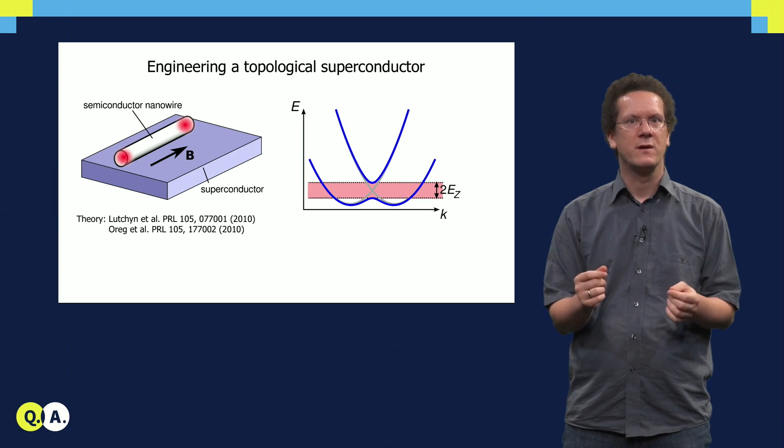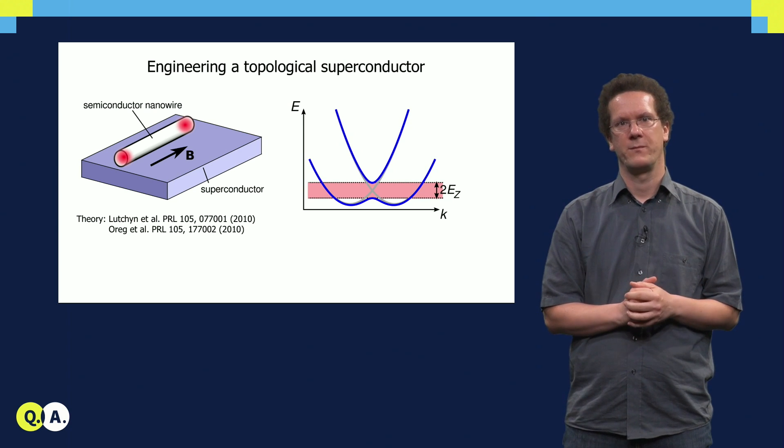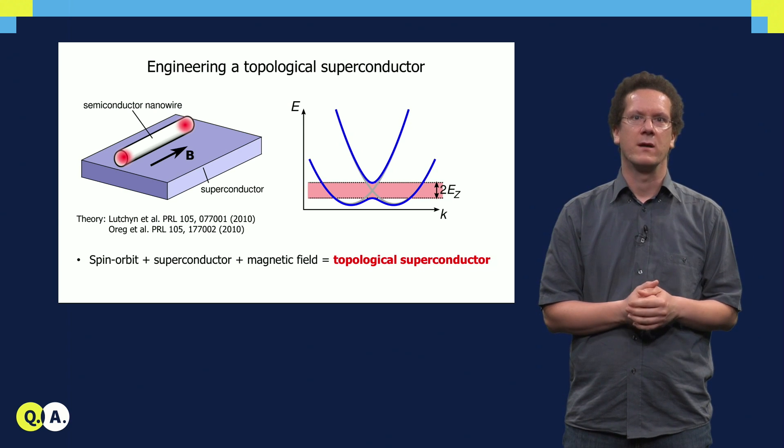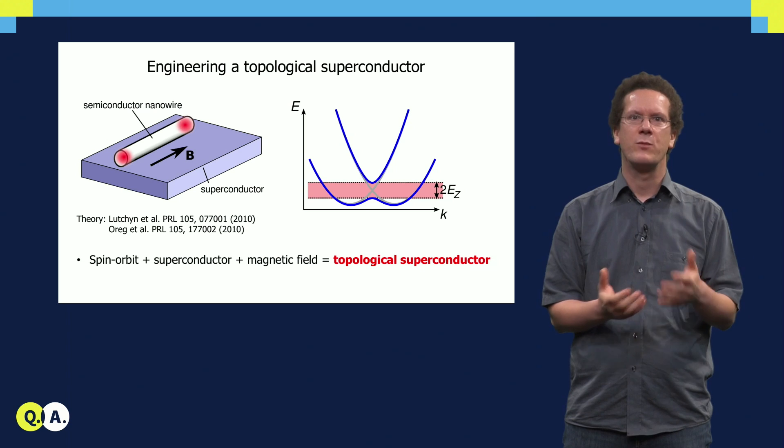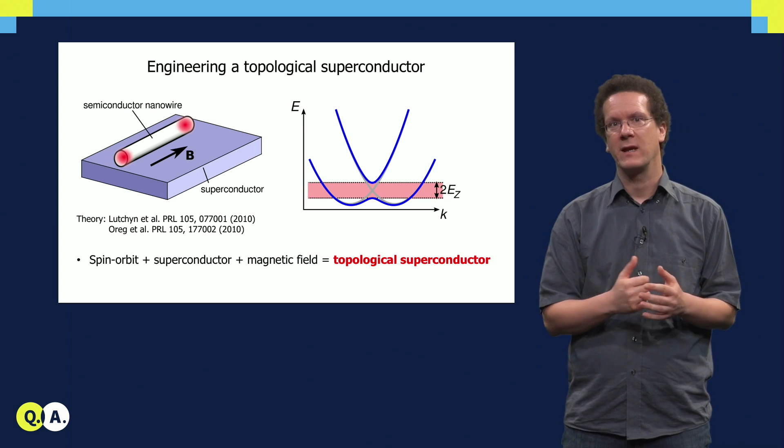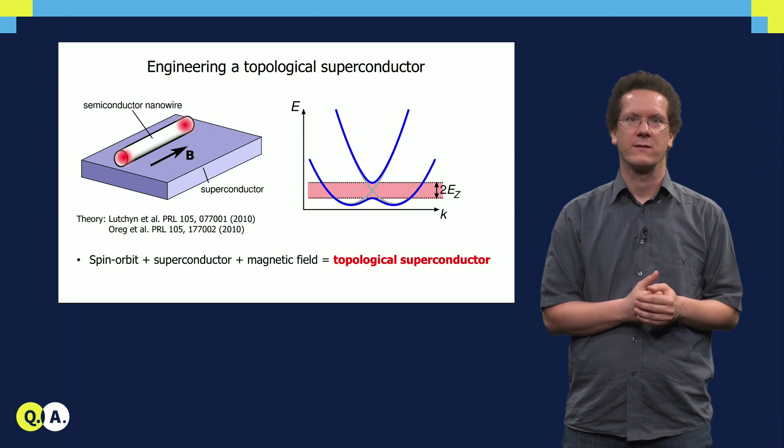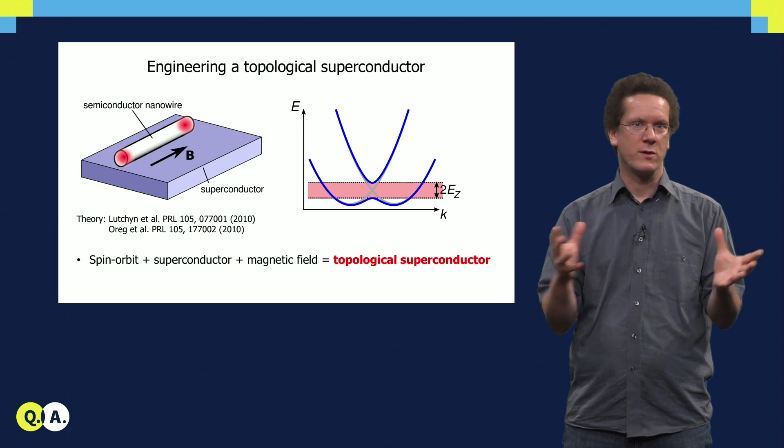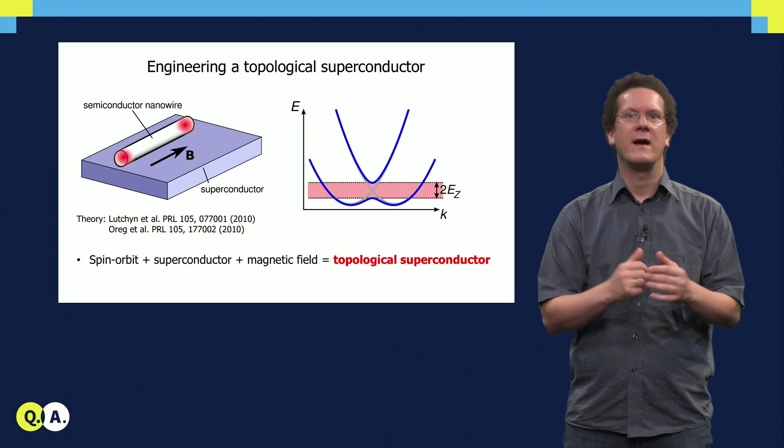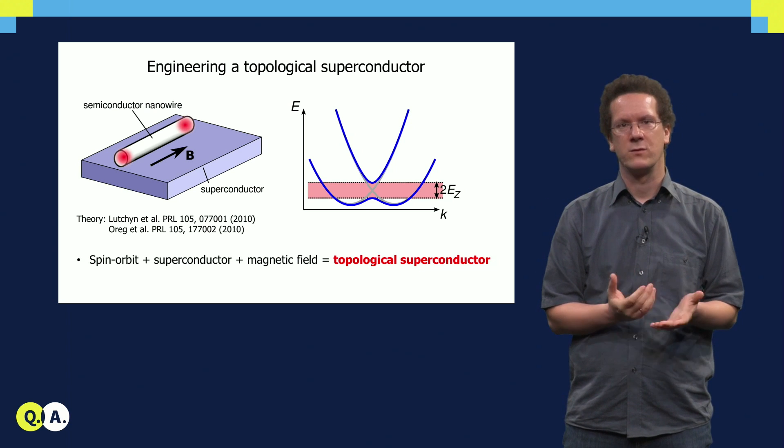I want to focus here on one particular example. It was shown that a semiconducting nanowire with spin-orbit interaction in proximity to an S-wave superconductor in a finite magnetic field can support Majoranas. Now one has to put all of these ingredients together. But this is not enough, one also has to tune some parameters to get to the topological phase.